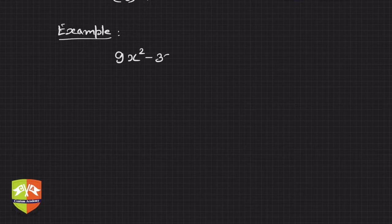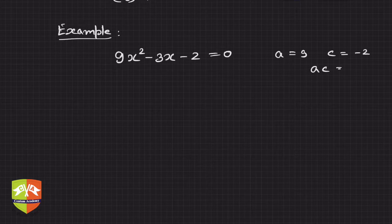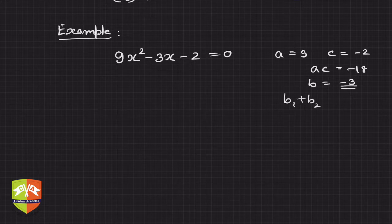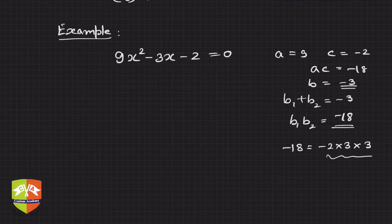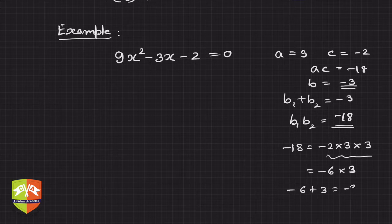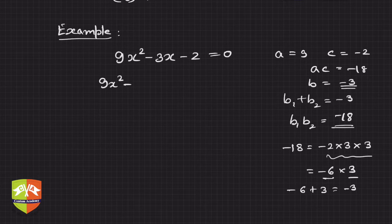Let's take one more example: 9x² − 3x − 2 = 0. Here a = 9, c = −2, so ac = −18, and b = −3. We have to split b such that b1 + b2 = −3 and b1 × b2 = −18. It is advisable to factorize ac: −18 = −2 × 3 × 3. One combination gives −6 × 3, and −6 + 3 = −3. So b1 = −6 and b2 = 3.